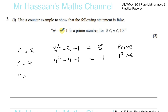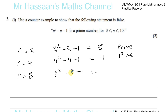For n equals 8: 8 squared minus 8 minus 1. That gives you 64 minus 8, which is 56, minus 1, which is 55.